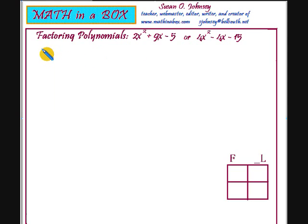These are special polynomials. In the first polynomial that I have written, there's 2x² + 9x - 5. There are three terms, thus it is called a trinomial.